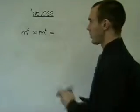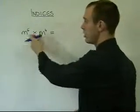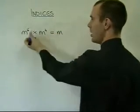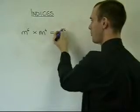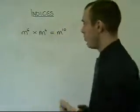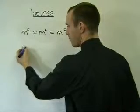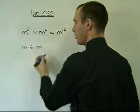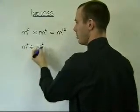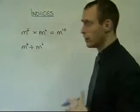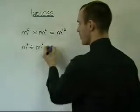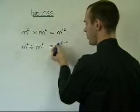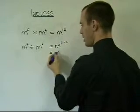As we've just found out, when we multiply the base numbers or base letters, we add the indices. So here we would have m to the power of 6 plus 4, which is 10. If we change this round and divide the base number m, the opposite happens to the indices. Where before we added 6 and 4, now we take them away. So we have m to the power of 6 take away 4, or m to the power of 2.